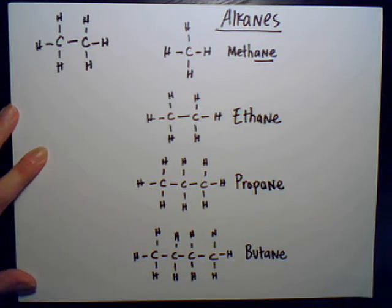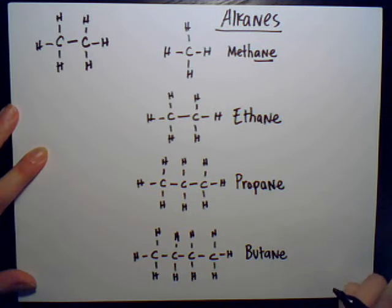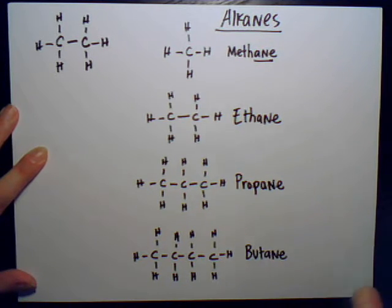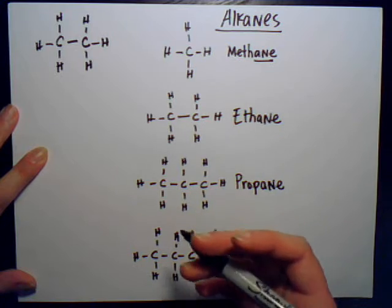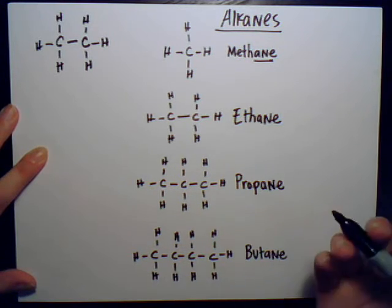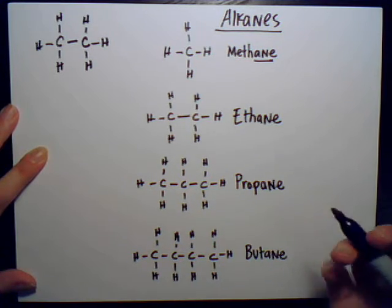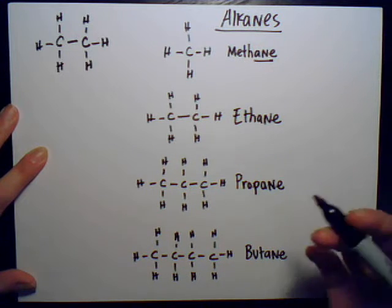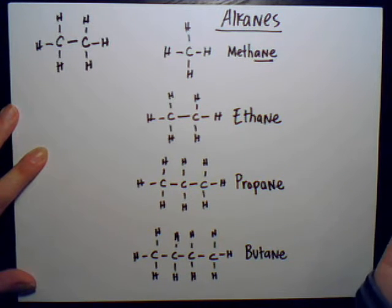After butane it's pretty simple: five carbons is pentane, six is hexane, seven is heptane, eight is octane, nine has no common name, ten is decane, and so forth depending on how many carbons you have in the chain.